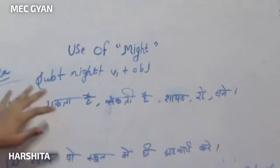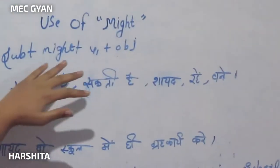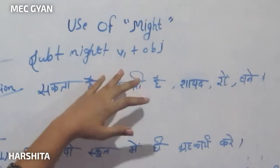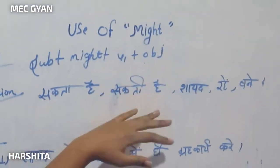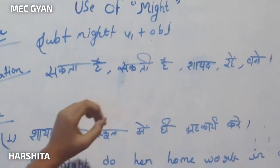Its rule for formula: Subject plus might plus working verb plus object.